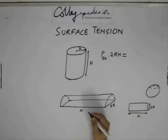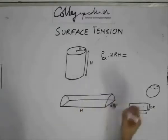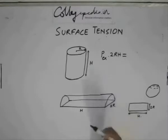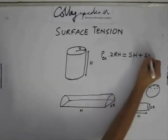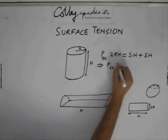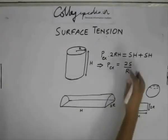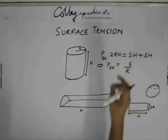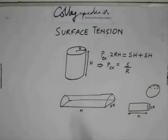The surface tension force here will be basically S along this h and S along this h. These will get cancelled off because of the fact that they are spread in all directions. So what we have here due to the surface tension is SH plus SH. This gives us Pxs being equal to 2s by r. So this is the excess pressure inside a liquid drop of cylindrical shape.